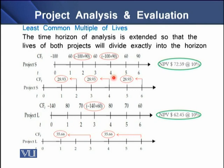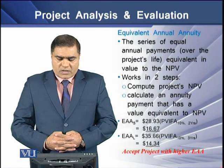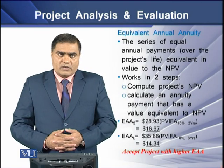When we discount our cash flows for both Project S and Project L, we come to a different NPV for each of the projects. For Project S, the NPV is $72.59, and for Project L, the NPV is $62.45. Both have a discount rate of 10%. At the given time period of six years and a given discount rate of 10%, clearly Project S can be selected as it has a higher NPV over Project L.